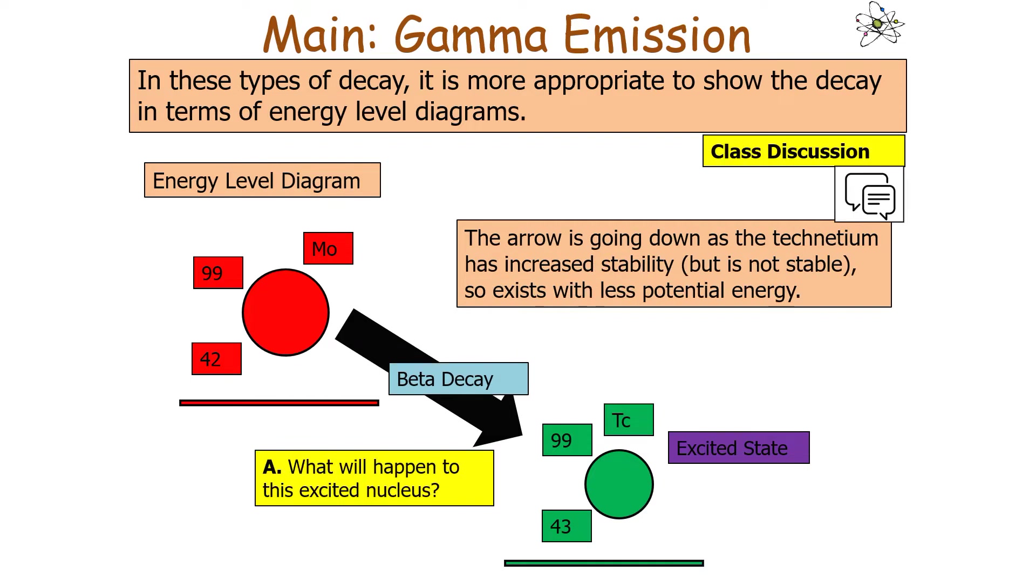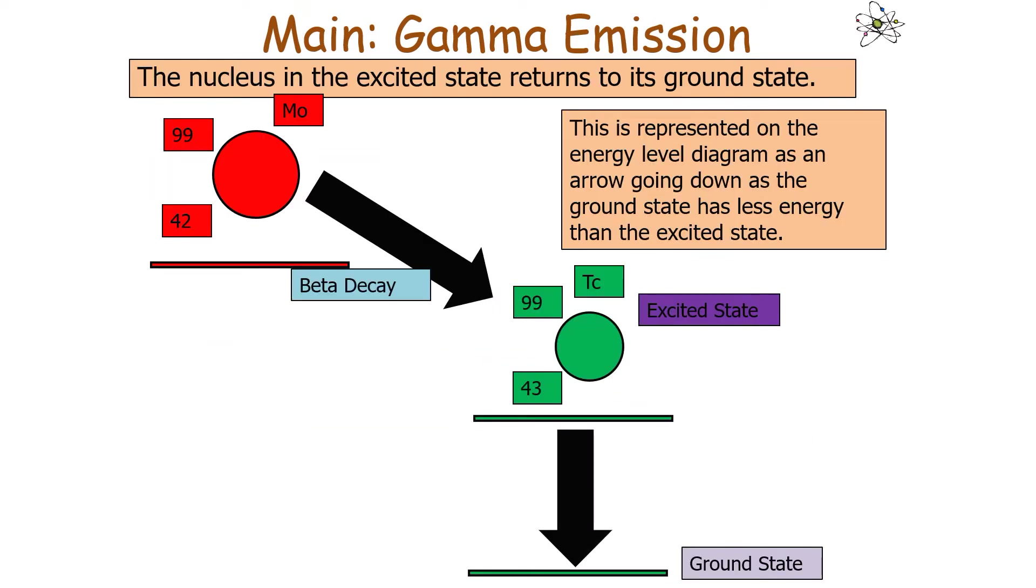What would happen to this excited nucleus? The nucleus in an excited state would eventually return to its ground state. This is represented on an energy level diagram as an arrow going down as the ground state has less energy than the excited state.